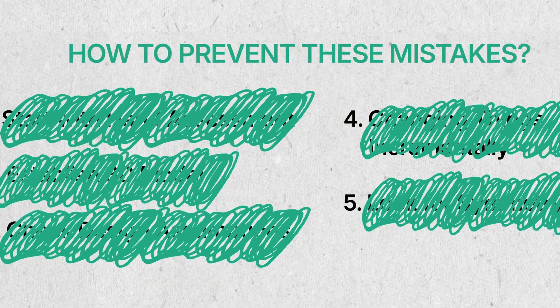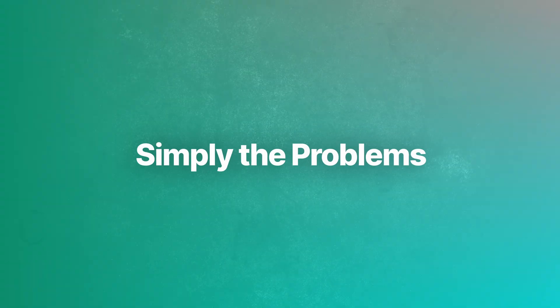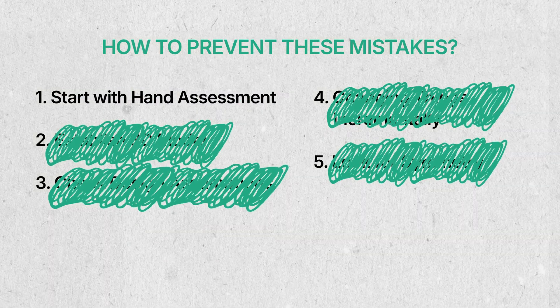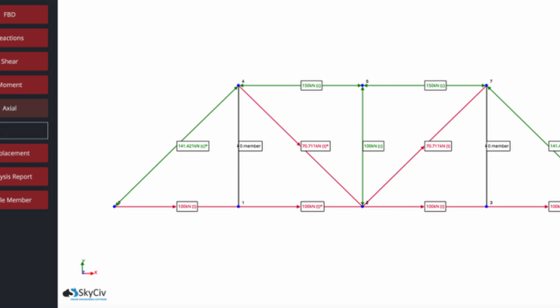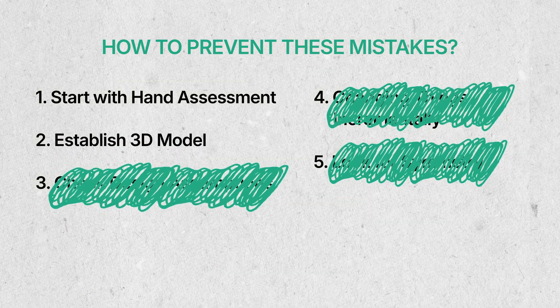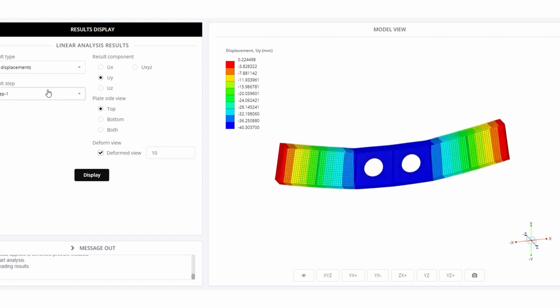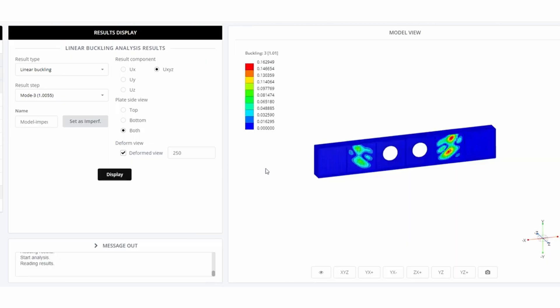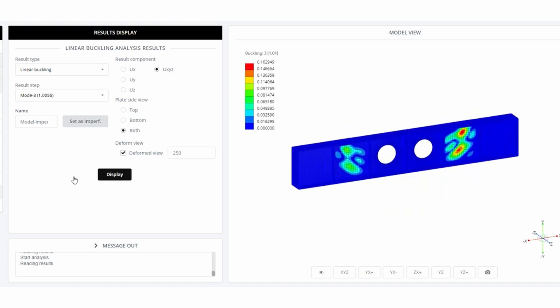So what are my best tips for catching these errors early? Simplify the problem as much as possible. Typically I'll start with a hand assessment, checking that answers are in the right order of magnitude. I'll then step up to a 2D model to make sure I'm still in the same order of magnitude — not assuming which one is correct, just validating across different modeling techniques. Then consider whether you need to go to 3D to capture more complex behavior and reach the optimized design. Seeing similar behaviors across hand, 2D, and 3D assessments means you can be more confident in your results.